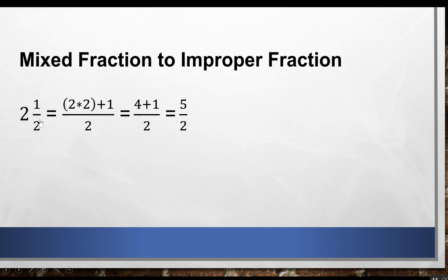Here is the example: 2 1/2. So 2 is the whole number, 1 is the numerator, and 2 is the denominator. As I said earlier, we will not change the denominator, so it remains 2. We multiply the denominator with the whole number, so 2 times 2, and then add the numerator which is 1. So 2 times 2 is 4, plus 1 is 5. Our final outcome is 5/2.